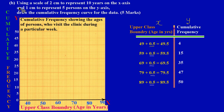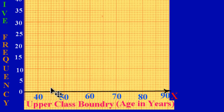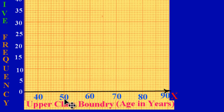Another thing to consider: the question is asking us to use a scale of two centimeters to represent ten years on the x-axis. If you notice, from where the 40 is and moving up to the next line is one centimeter, and then two centimeters - so the distance between 50 and 40 is two centimeters. We have used two centimeters to represent 10 units, going up by 10.